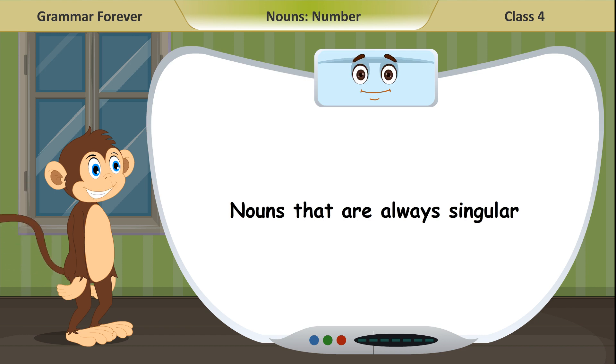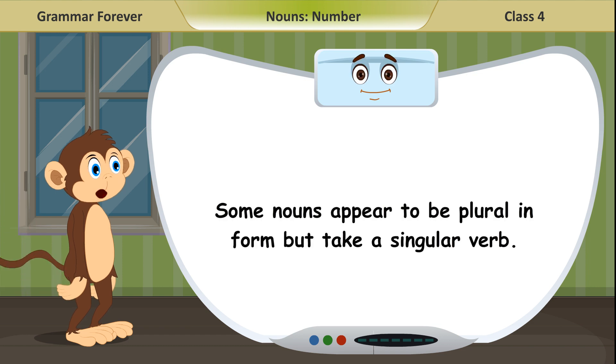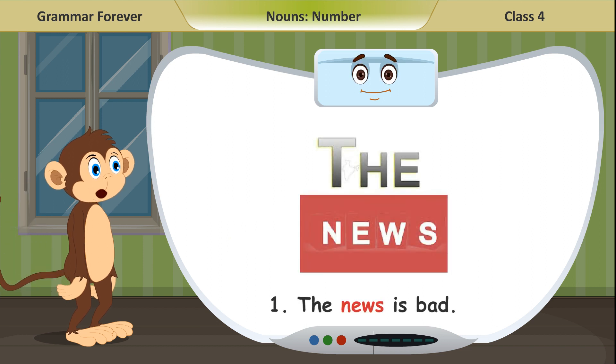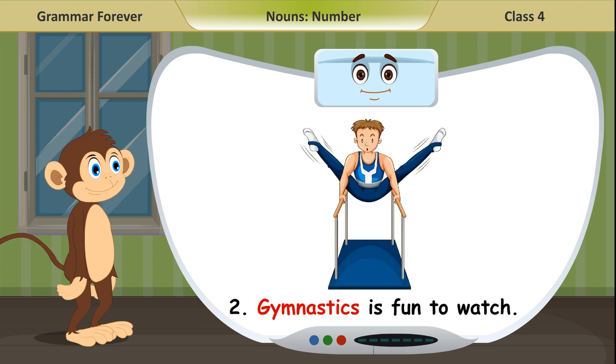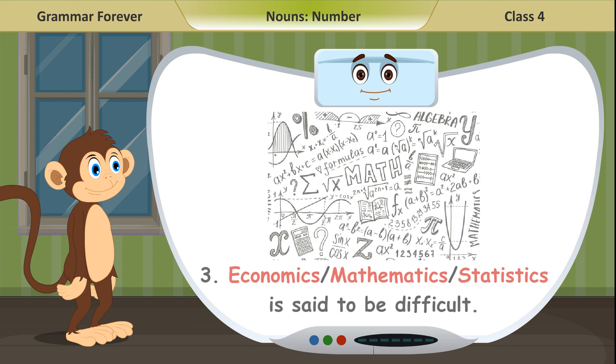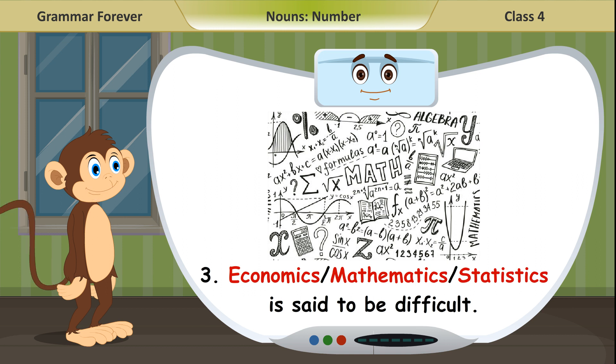Nouns that are always singular. Some nouns appear to be plural in form but take a singular verb. Examples: The news is bad. Gymnastics is fun to watch. Economics, mathematics, statistics is said to be difficult.